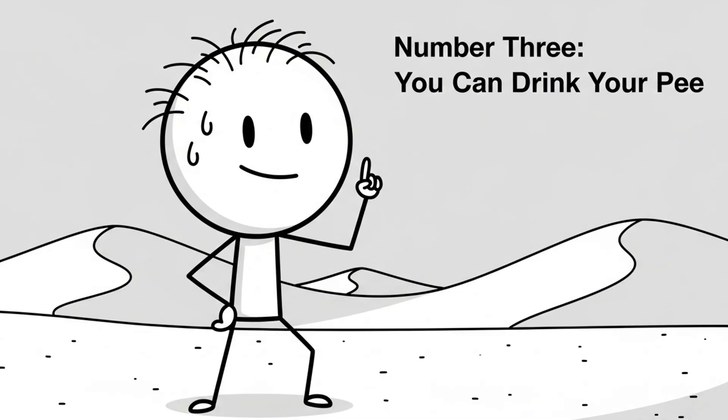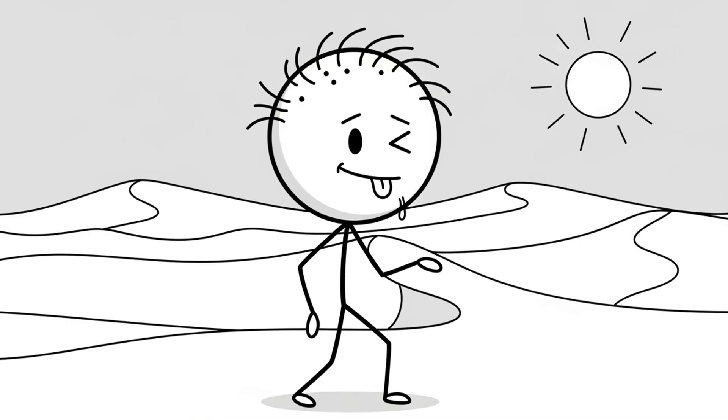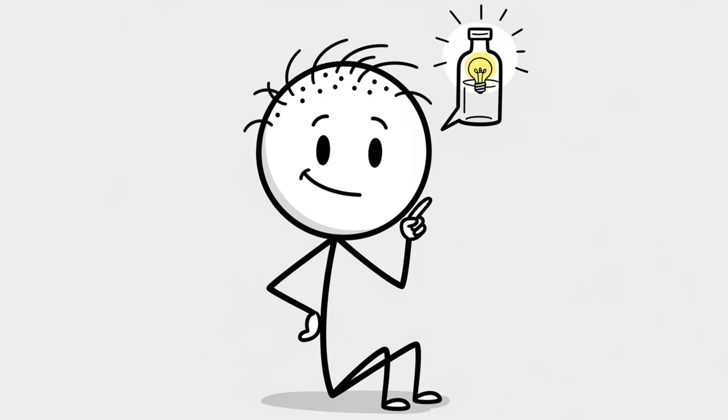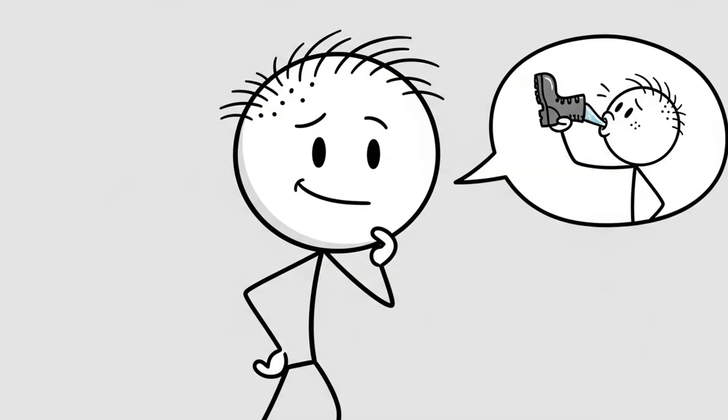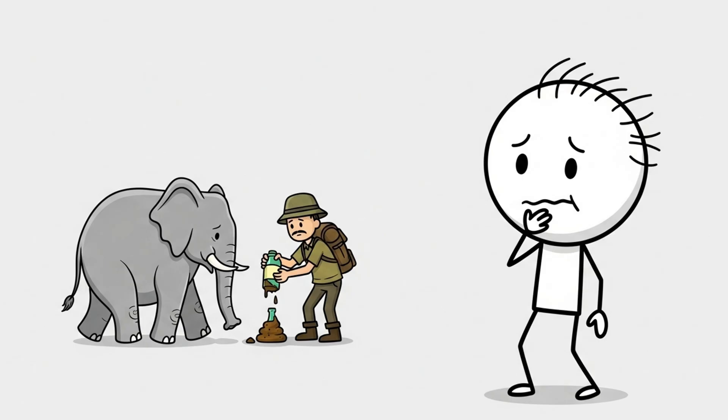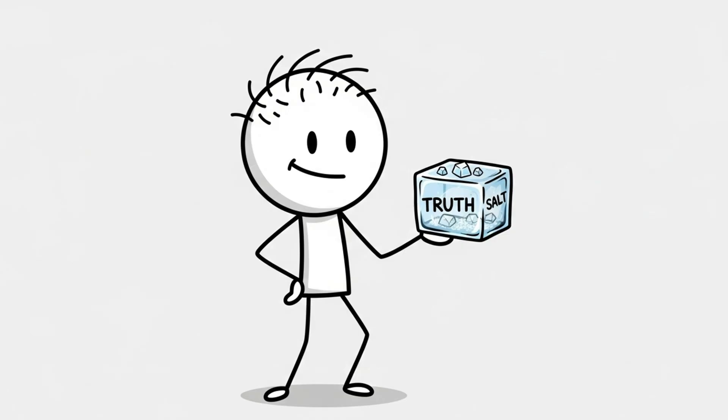Number 3. You can drink your pee. You're dehydrated, lost in the desert, and your body is starting to feel like it's made of beef jerky and regrets. And then it hits you. I'll just drink my pee. Because you've seen that one survival guy do it. You know the one. He eats bugs like snacks and squeezes hydration from elephant dung like it's a juice cleanse. Here's the cold salty truth. Your pee is not Gatorade.